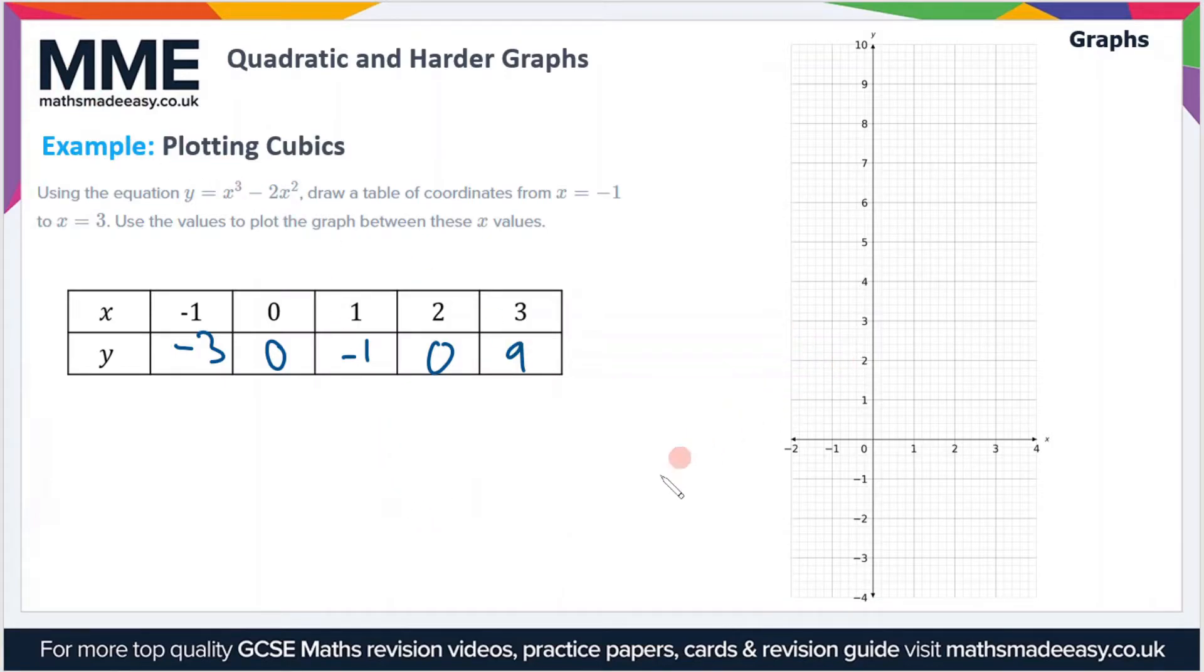Let's plot these points then. The first one is minus 1, minus 3 down there. Then we have 0, 0 which is the origin. We have 1, negative 1 which is there. 2, 0 which is here, and 3, 9 which is all the way up here.